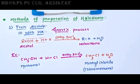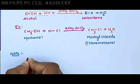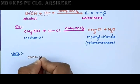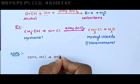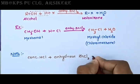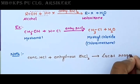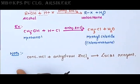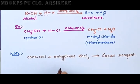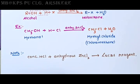Note that concentrated HCl and anhydrous zinc chloride together are called Lucas reagent. Lucas reagent is used to distinguish between primary, secondary, and tertiary alcohols.